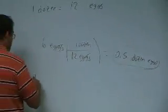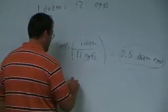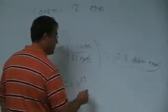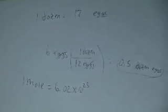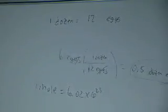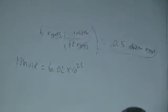So one mole is the same thing of 6.02 times 10 to the 23, whatever. So if you had a mole of doughnuts, how many doughnuts would you have? 6.02 times 10 to the 23.